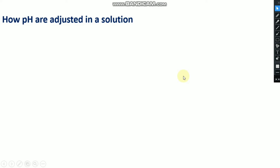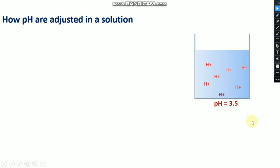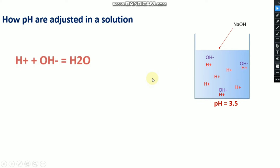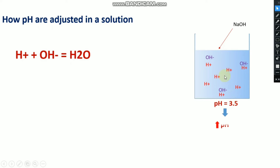To explain how pH is adjusted in a solution: if a solution has a high number of H⁺ ions it is acidic. Assume the pH is 3.5 and you want to increase it slightly. You add sodium hydroxide (NaOH) to the solution. The sodium hydroxide dissociates to form OH⁻ ions, which react with the H⁺ ions and neutralize them. As a result, the number of H⁺ ions decreases and the pH increases.